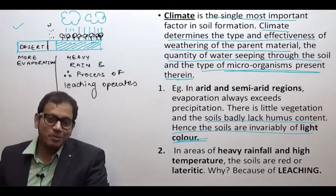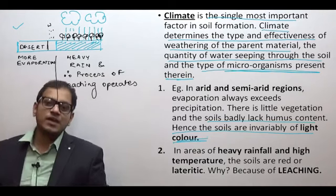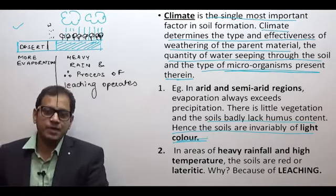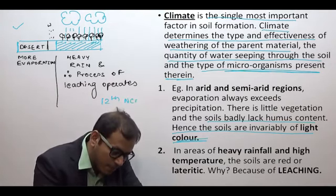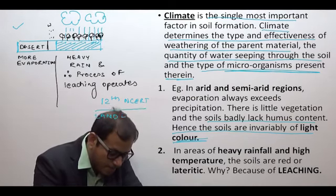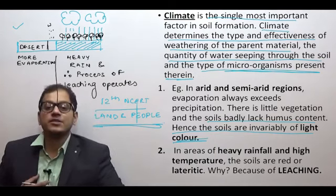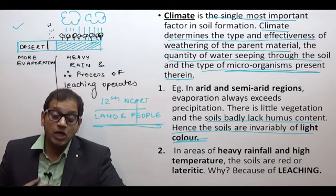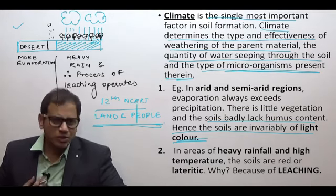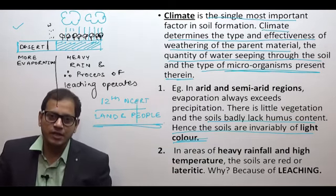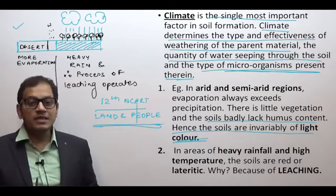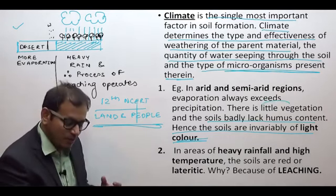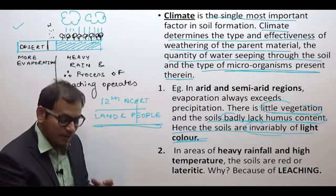There is one NCERT — the standard 12th NCERT on India: Land and People — which has most of the factual data. Do this NCERT very carefully. In arid and semi-arid regions, evaporation always exceeds precipitation, there is little vegetation, the soils lack humus, and therefore they are invariably of a lighter color. On the other hand, in areas of heavy rainfall and high temperature, soils are red in color — they are known as lateritic soils.